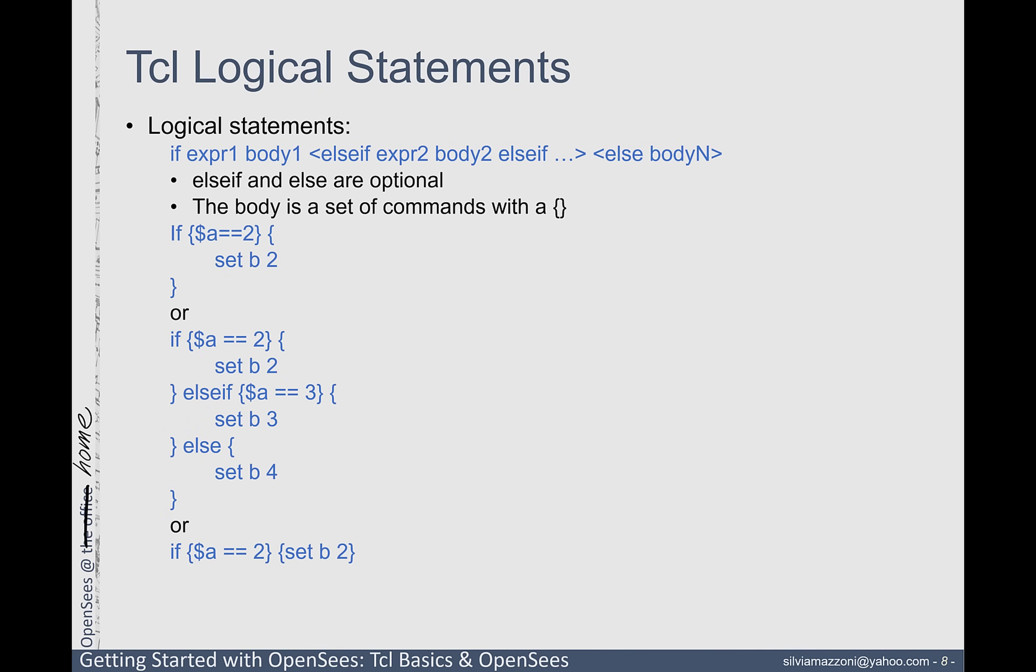Just like all programming languages, TCL has logical statements. Again, just like everything else, you need to learn the format of these statements. Here's a simple example. If A is equal to 2, yes, you have to use the double equal, then B, set B equal to 2. So you just have to understand the format. And then anything that's in the brackets is what is checked. And the body of the command is within these other brackets. You can also use else if statements and else statements. So very common, just like every other language that it has. You can even write it out simply like this. Once you understand the format, that's really the only difference between TCL and Python.